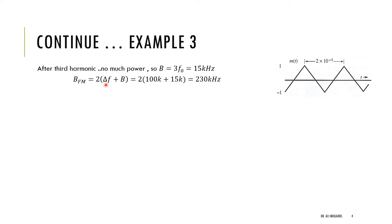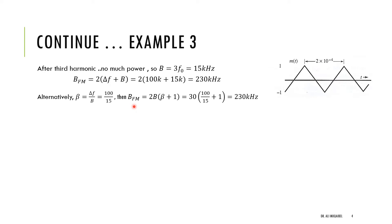Applying Carson's rule, the FM bandwidth is 2×(delta_F + B) = 2×(100 kHz + 15 kHz) = 230 kHz. We can get the same answer using the modulation index formulation, where beta = delta_F / B = 100/15. Either way, the result is the same — it is just another way of writing Carson's rule.